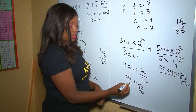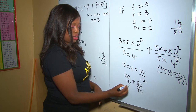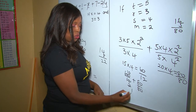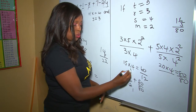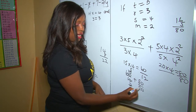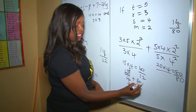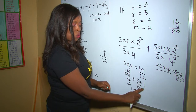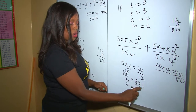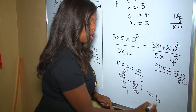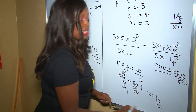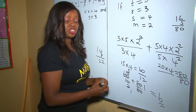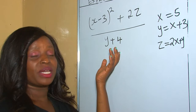Now we join them using the addition sign: 60 over 12 plus 80 over 80. We can simplify before adding. 60 divided by 6 is 10, 12 divided by 6 is 2; then 10 divided by 2 is 5, 2 divided by 2 is 1. And 80 divided by 80 is 1. So we have 5 plus 1, which is 6. Our final answer is 6.